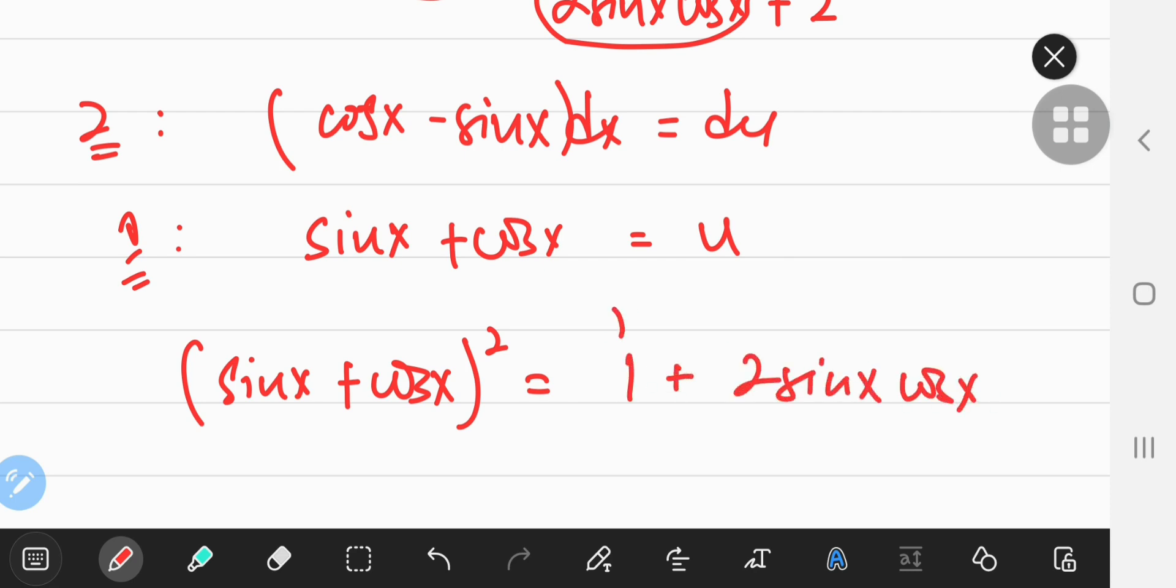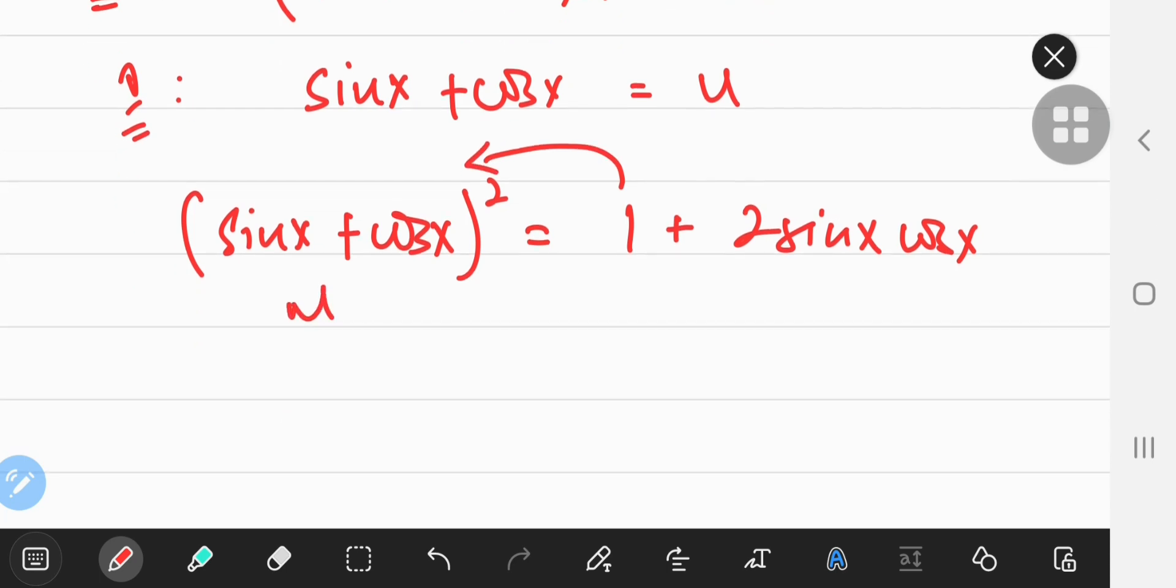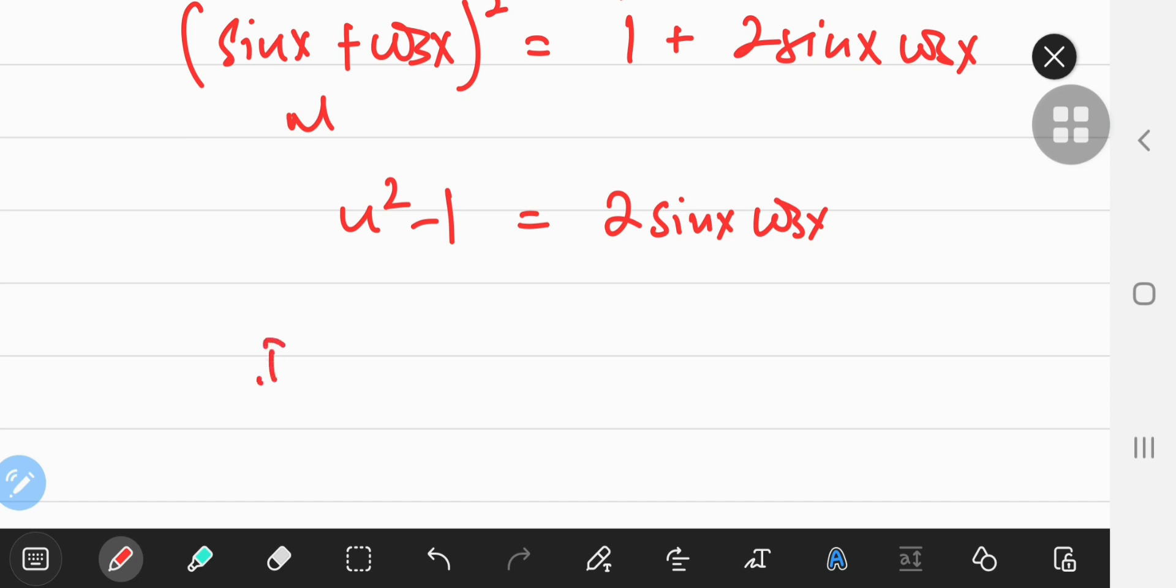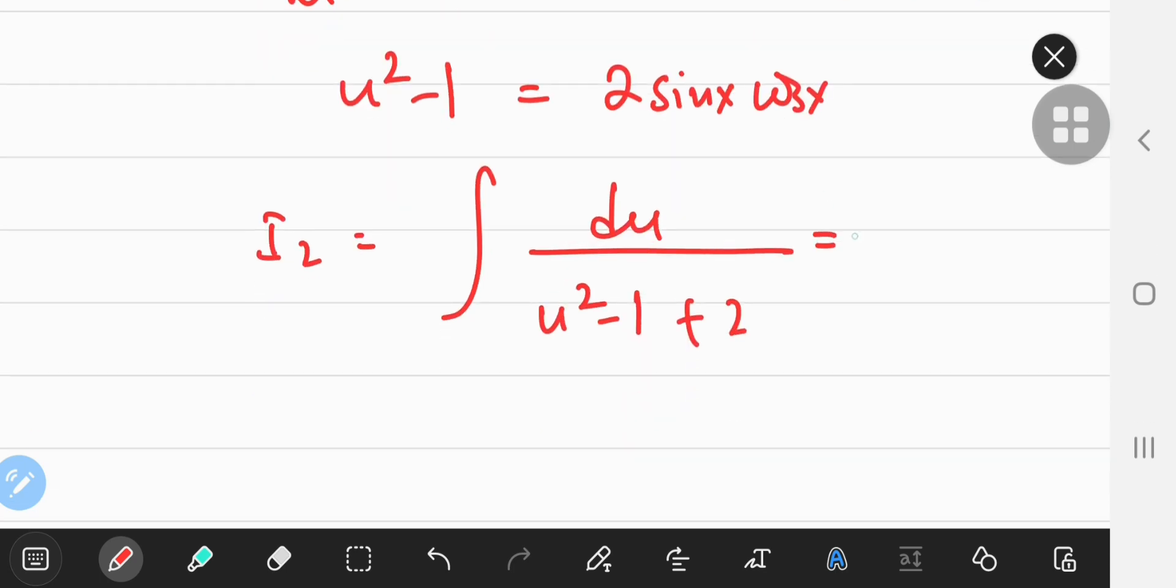So shifting it there, this was u. So I'm going to have u squared minus 1 equal to 2 times sine x cos x. So that means my integral i2 is, in fact, du by u squared minus 1 plus 2, which is in fact du by u squared plus 1, and we all know what that reduces to.